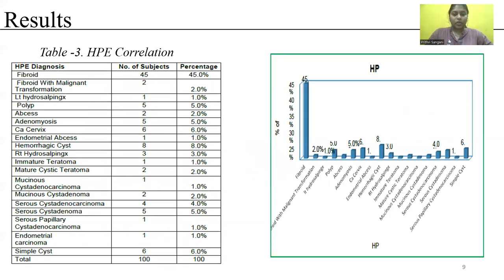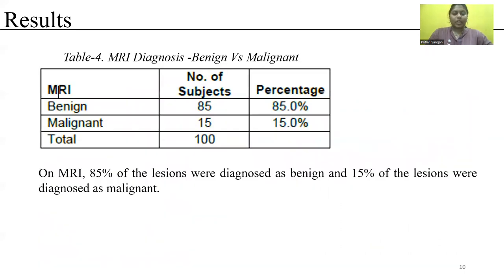On HPE correlation, the MRI diagnosis correlated with HPE findings showing fibroid in up to 45% of cases. On MRI, 85% of the lesions were diagnosed as benign and 15% of the lesions were diagnosed as malignant.